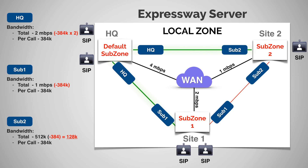What happens if another endpoint at site one makes a call to an endpoint in site two while those other two calls are taking place? The call takes the shortest path and hits the sub one pipe first — we can take 384k out of that, and there's still plenty of bandwidth left in the sub one pipe. But when we get to the sub two pipe, we can't do a 384k call because there's only 128k left. So that call will still connect, but only at 128k. Since it's forced into a 128k call, it's going to take out 128k from the sub one pipe as well — no longer 384k.